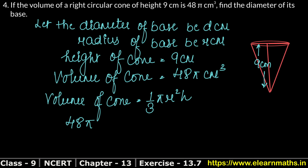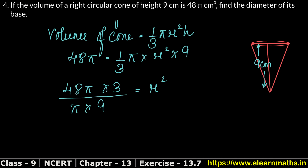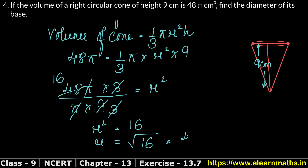Now the volume is 48π. Because there is π on both sides, I will not substitute the numerical value of π — it will easily cancel. So: 48π = 1/3 × π × r² × 9. Now r² remains on one side; everything else goes to the other side. So r² = 48π × 3 divided by π × 9. Pi cancels. 3 and 3 cancel with 9, giving r² = 16. Therefore r = √16 = 4 cm.